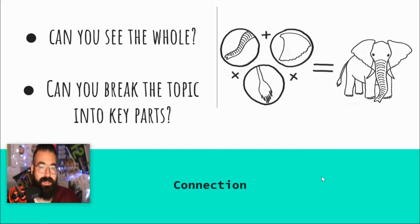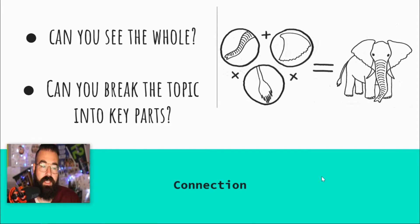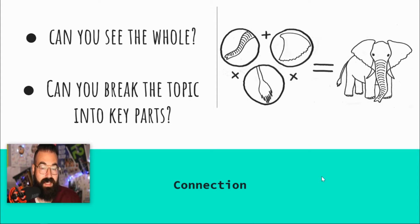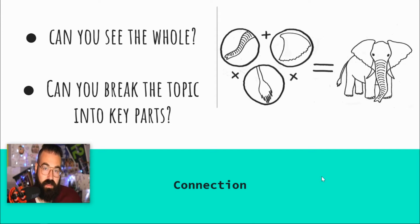Last time we talked about being able to see the whole of the topic we are looking at, and we compared this to the parable of the three blind men and the elephant — how if you're just focused on one little part of the elephant, you don't understand what the whole elephant is. In the same way, if we only focus on one teen activist, we won't know what teen activism is. And if we can get this big idea of teen activism, it's at that point that we can break it apart into the key parts that make it up. We might call those subtopics.